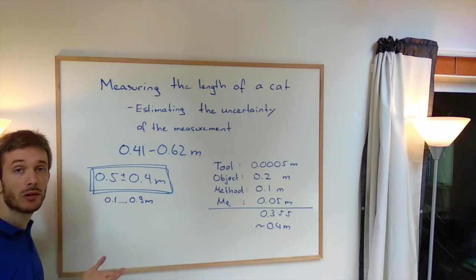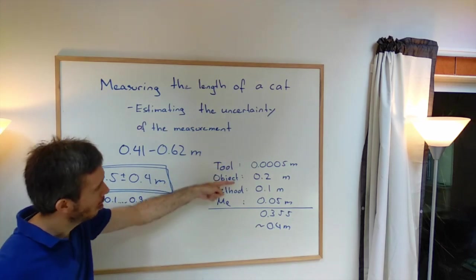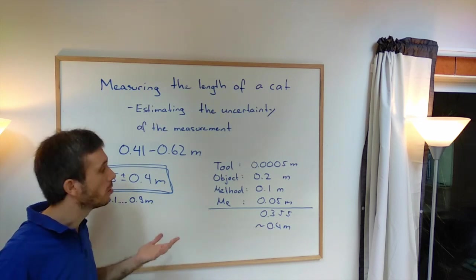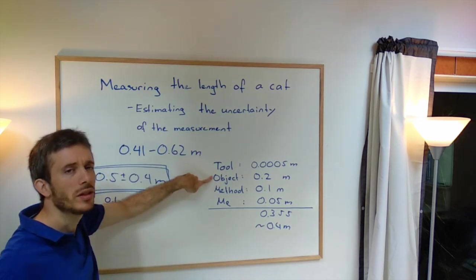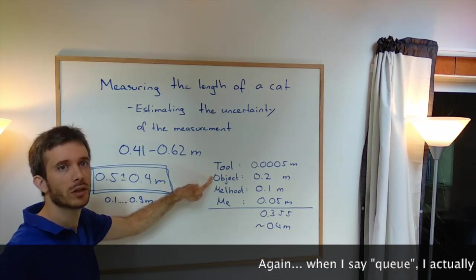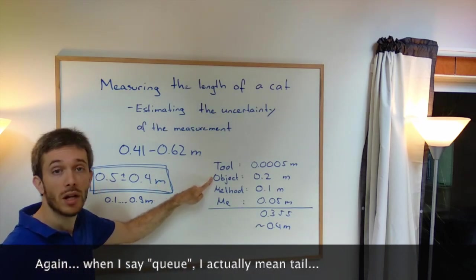So the next step would then be to think, how can we improve precision? Then we go back at our estimation table and we see where did most of the uncertainty come from? Most of the uncertainty came from that we didn't define if we measure cat with the Q or without the Q, with the whiskers, without the whiskers. So we can improve this uncertainty a lot.